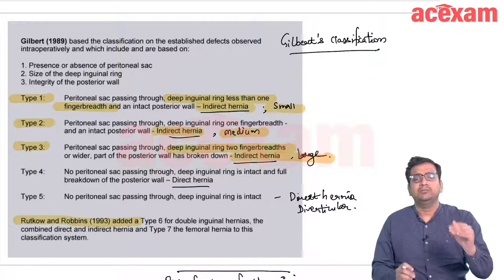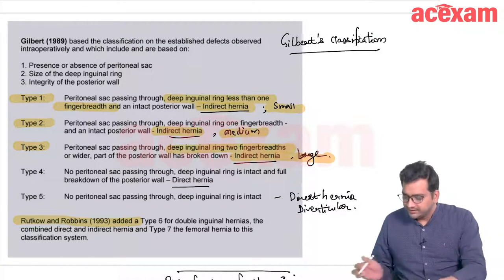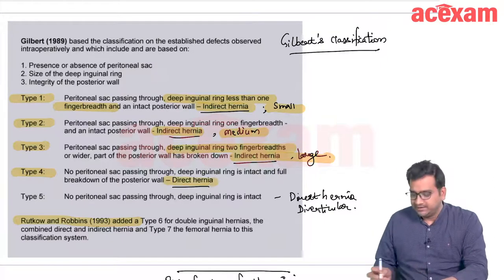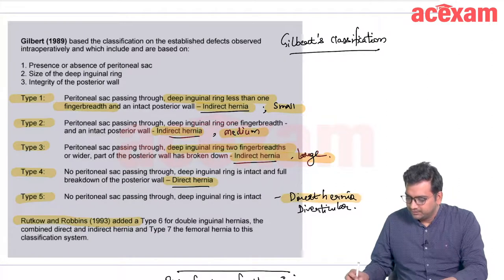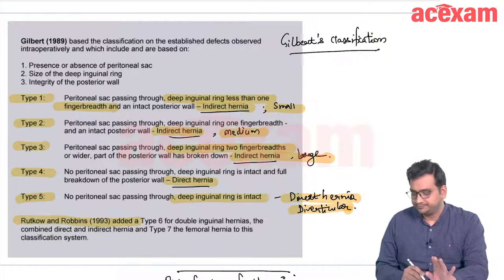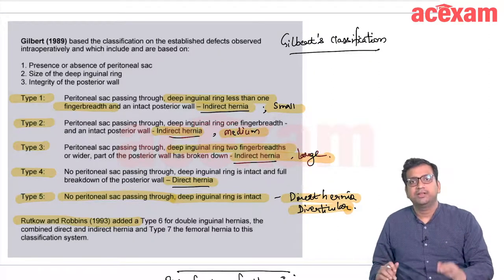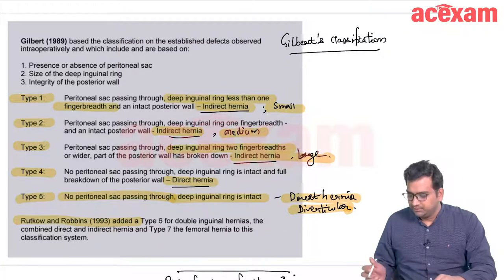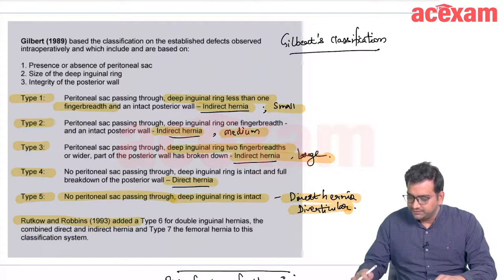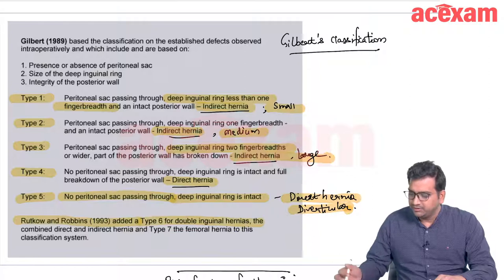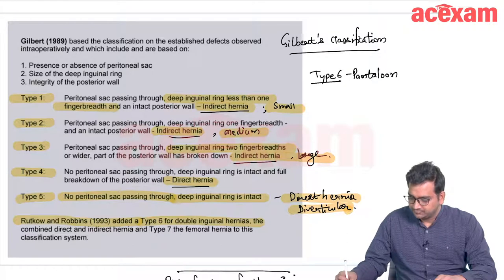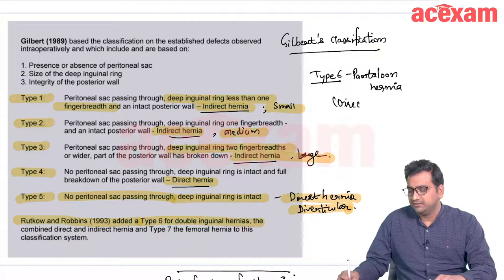Indirect inguinal hernia small, medium, and large correspond to Gilbert types 1, 2, and 3 respectively. Type 4 is a direct hernia. Type 5 is a direct hernia of diverticular type where the deep inguinal ring is intact and there is no peritoneal sac. The two additional types: Type 6 is a pantaloon or double hernia (both direct and indirect), and type 7 is femoral hernia.